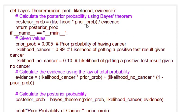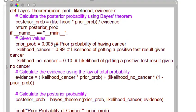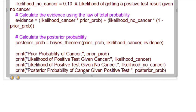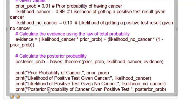Now what we have to find: suppose a person goes for a test and the test is positive — what is the probability that they suffer from cancer? We need to find P(cancer | test positive) — the posterior probability. This is the Python code for this. We need to calculate the evidence, which equals likelihood of cancer multiplied by prior probability, plus likelihood of no cancer multiplied by (1 minus prior probability). Using that formula, we then get the posterior probability.